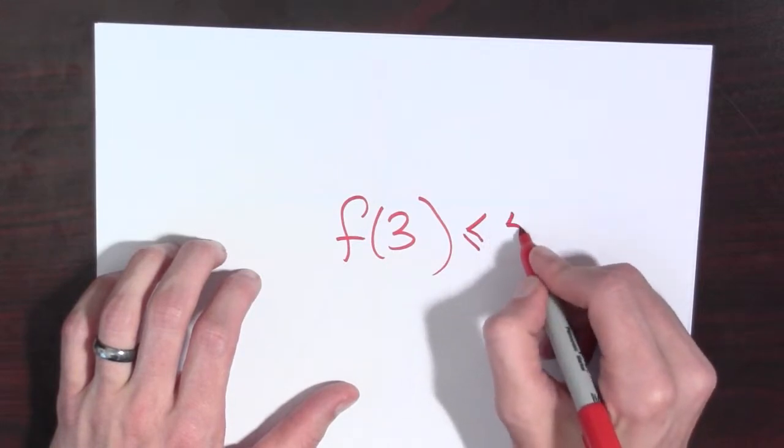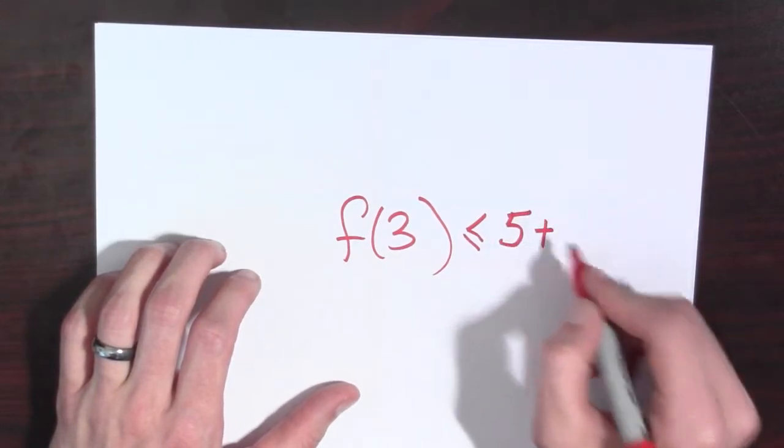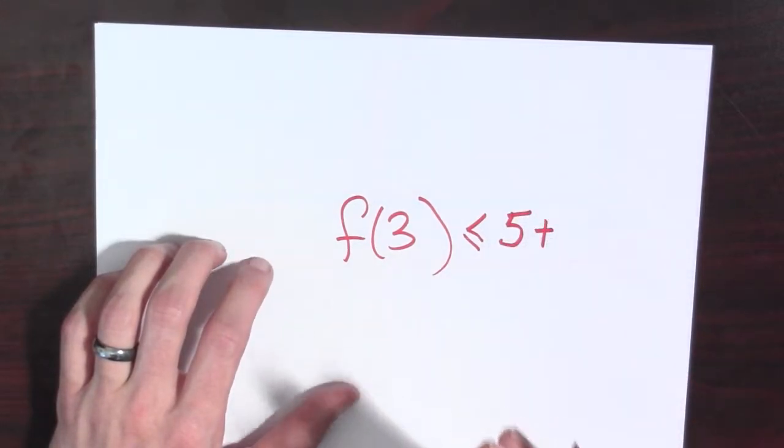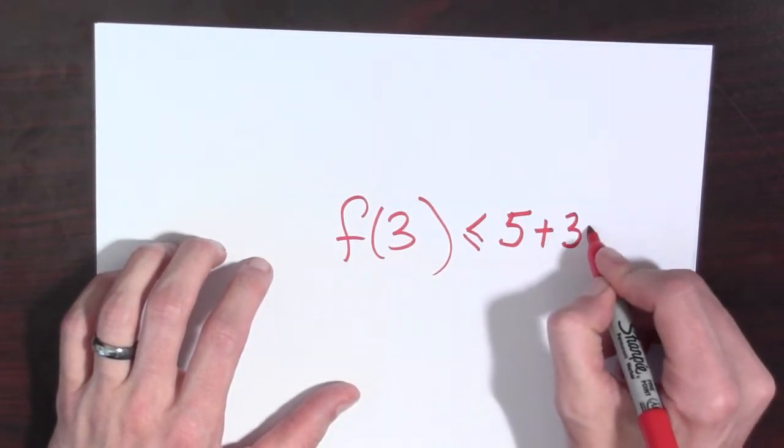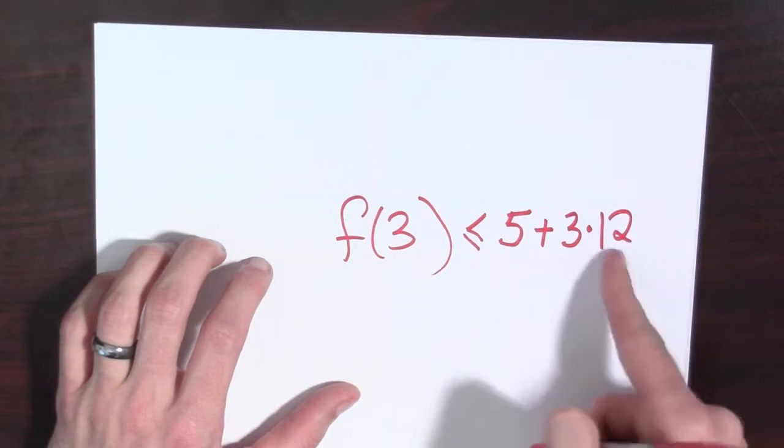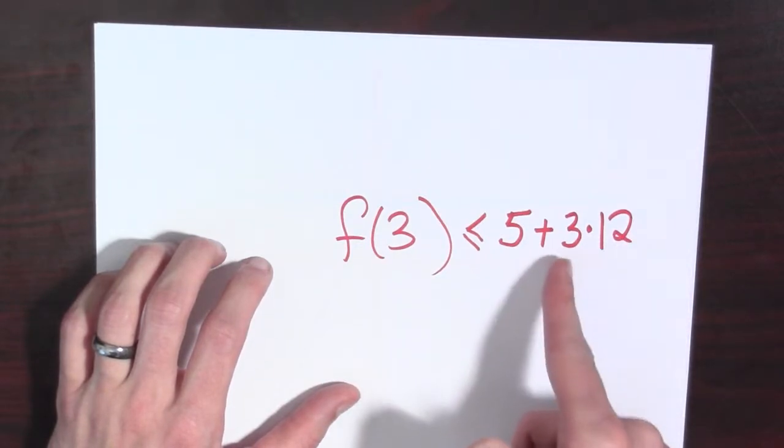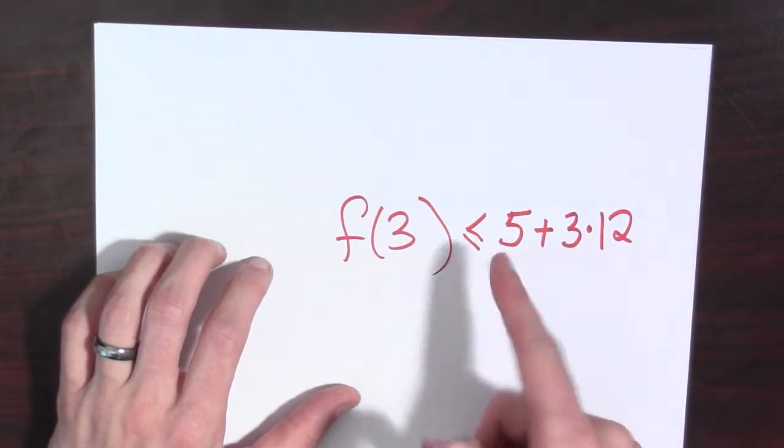So this is going to be less than or equal to 5 plus the maximum amount that the function could have grown after 5. And so that's 3 times 12 because this is the maximum growth rate. This is how far we've traveled, and this is the value.